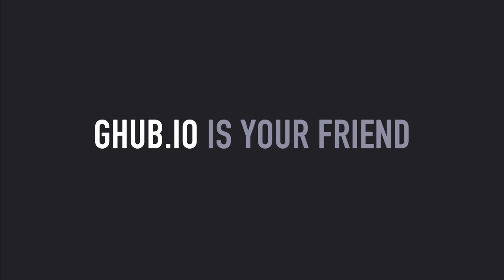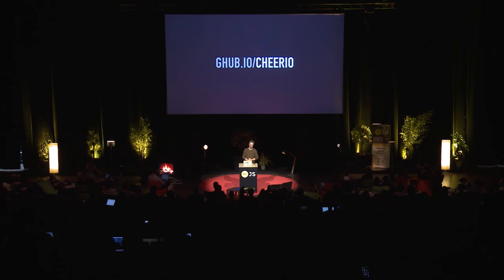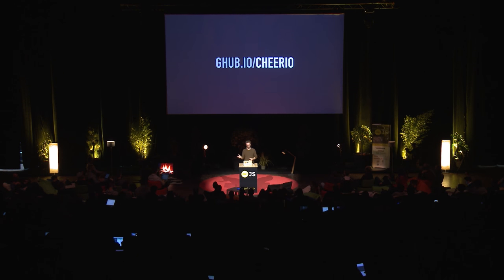I use a site called ghub.io every single day. It's a way to redirect to the GitHub repository page for an NPM package — so rather than typing npmjs.com/package/cheerio, you type ghub.io/cheerio and go straight to the GitHub website. Chokidar is a really awesome file watcher. NPMRC is a tool for switching between different NPM registries so you can swap out your NPMRC file.